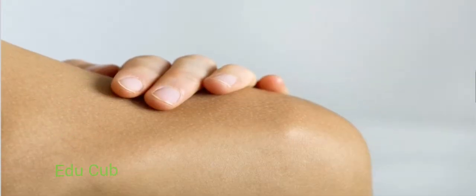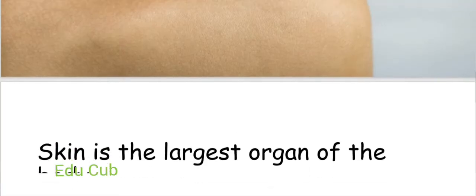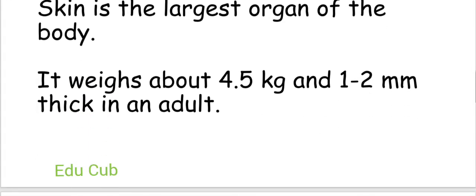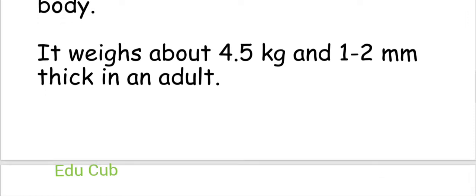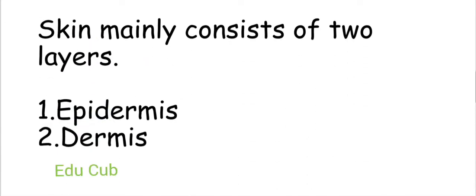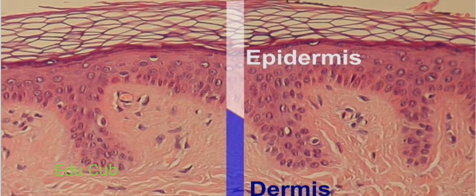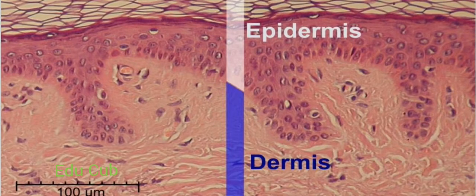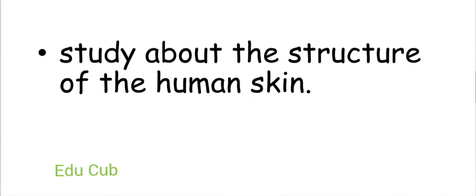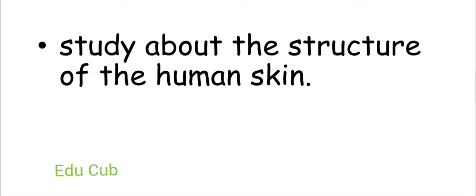This is a diagram of human skin. Skin is the largest organ of the body. It weighs about 4.5 kilograms and is 1 to 2 millimeters thick in an adult. Skin mainly consists of two layers: the epidermis and dermis. Now you have to study about the structure of human skin.